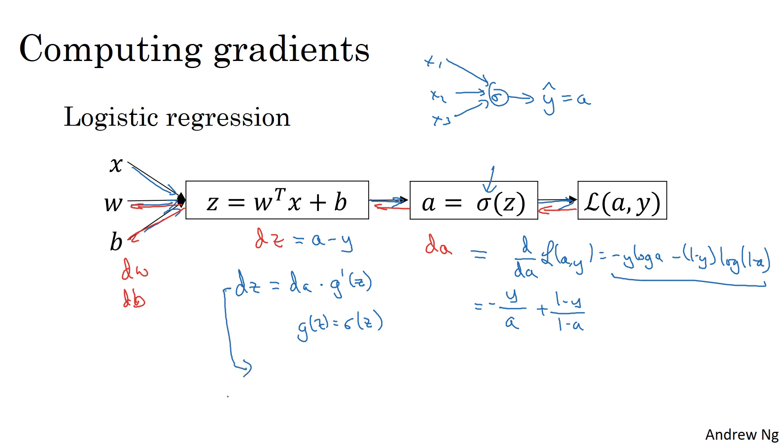As an aside, only for those who are familiar with the chain rule of calculus, the reason for this is because a is equal to sigmoid of z, and so partial of L with respect to z is equal to partial of L with respect to a times da dz. But since a is equal to sigmoid of z, this is equal to d/dz g(z), which is equal to g prime of z.